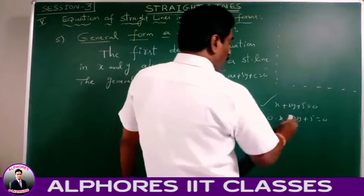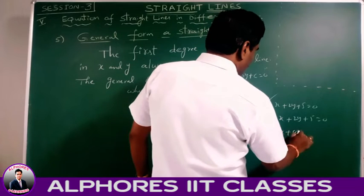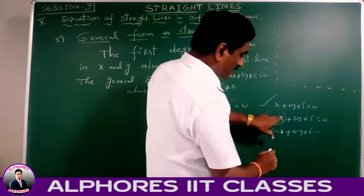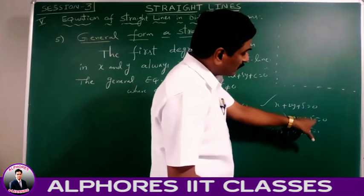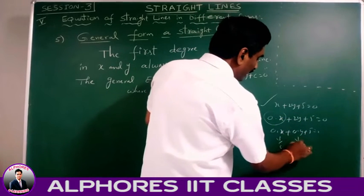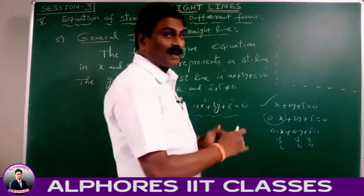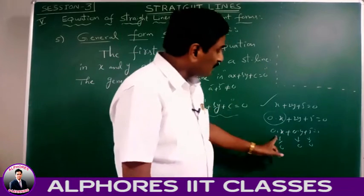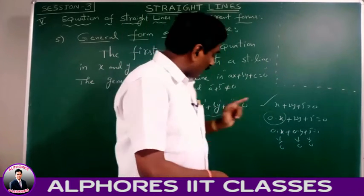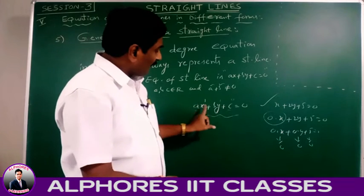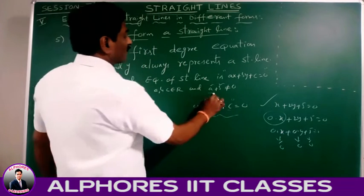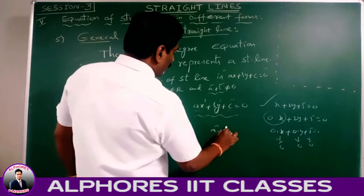Suppose the y coefficient is also 0: 0·x + 0·y + 5 = 0. The degree of 0·x is 0, the degree of 0·y is 0, and the constant's degree is 0. So it is a zero-degree equation — it is a meaningless form. Therefore, the first degree equation ax + by + c = 0 represents a straight line only when a² + b² ≠ 0.